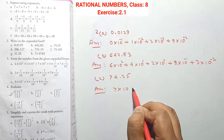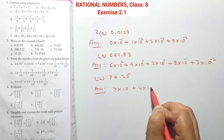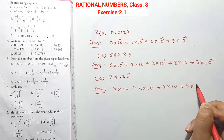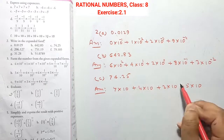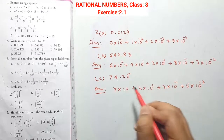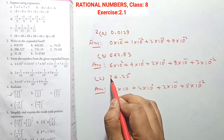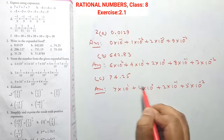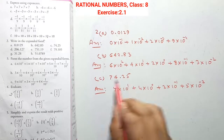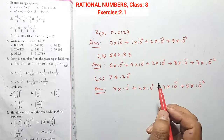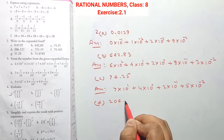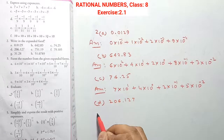7 into 10 + 4 into 10 + 2 into 10 + 5 into 10. After the decimal: the first digit gets power minus one, the second gets minus two. The first digit before decimal gets power zero (unit place), the second position gets one, third gets two. So the number is 206.127, and we will write it accordingly.